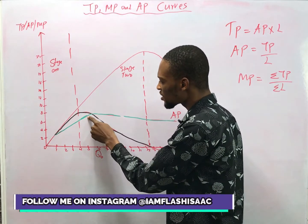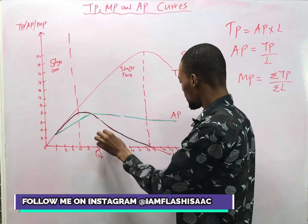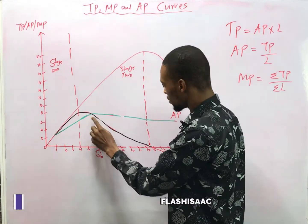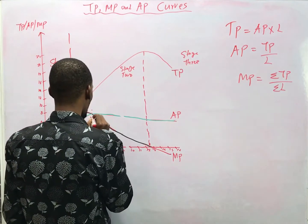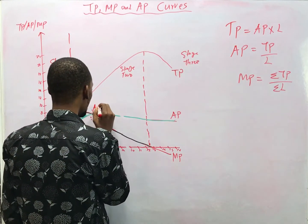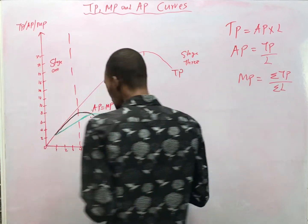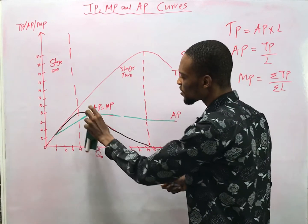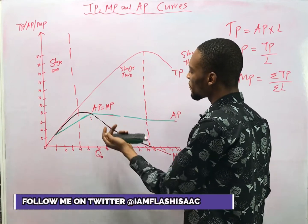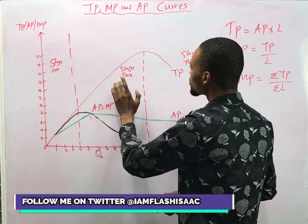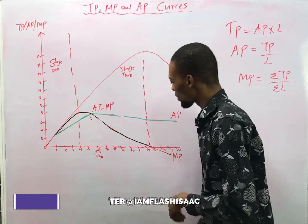As they both come down, it gets to a point where average product equals marginal product — that is where AP equals MP. At the point where they begin to drop, average product equals marginal product. These are the three stages of production: stage one, stage two, and stage three.